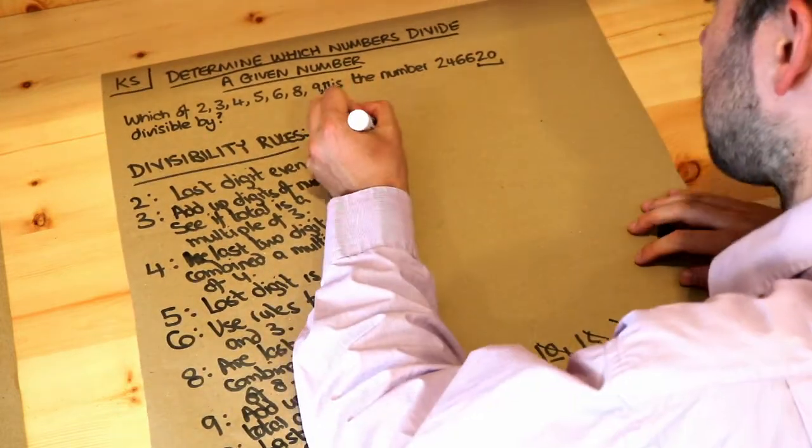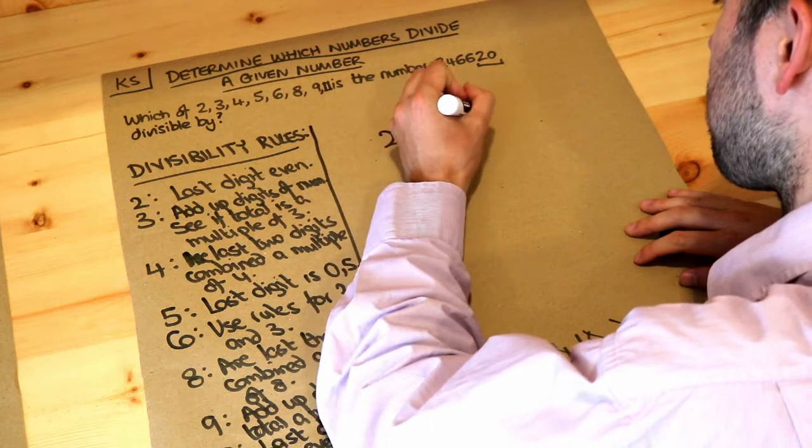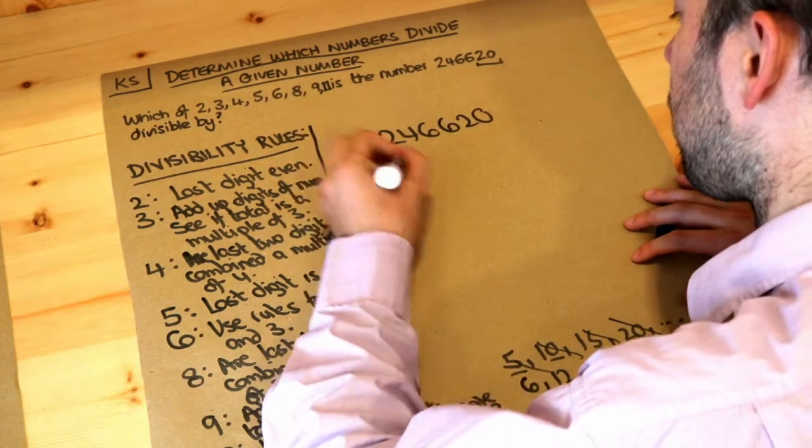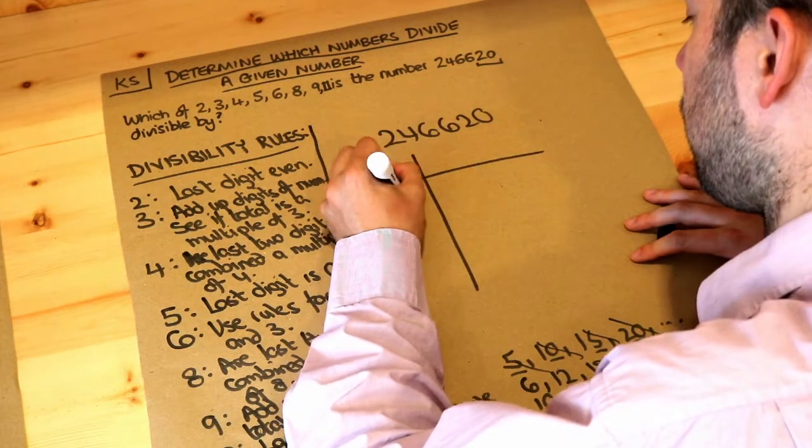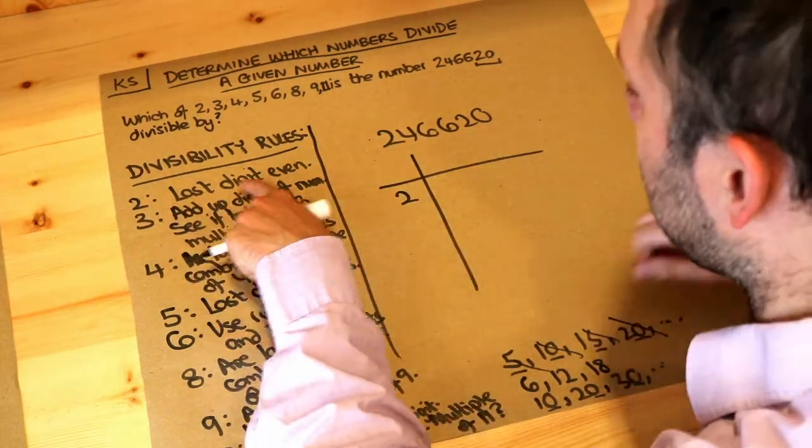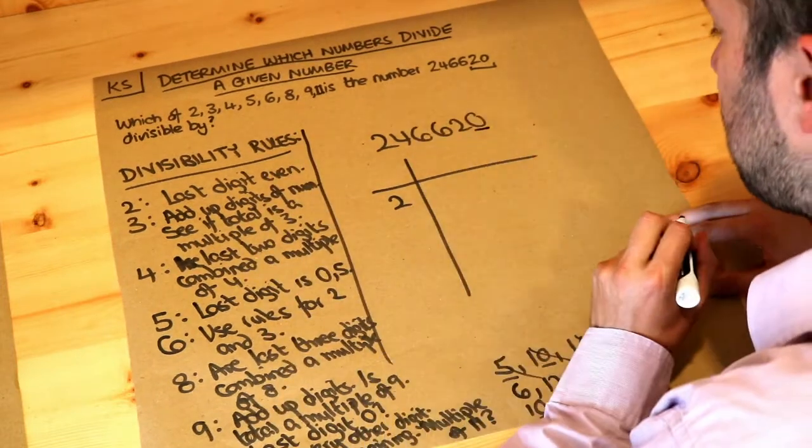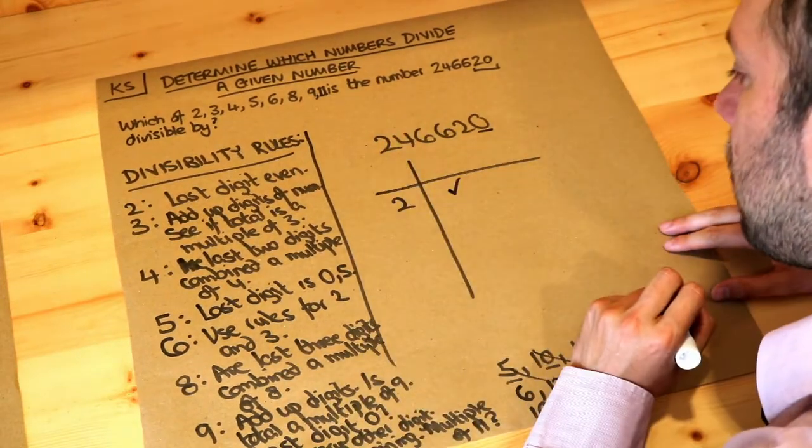So let's take this number, let's just write it a bit bigger. So is it a multiple of 2? Well let's look at the rule. Is the last digit even? That's the last digit 0. Yes it is. So therefore it is a multiple of 2.